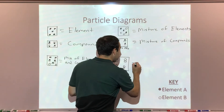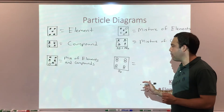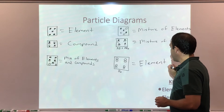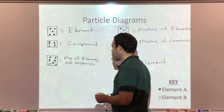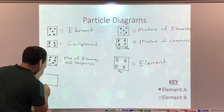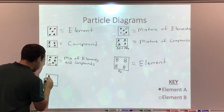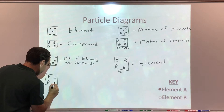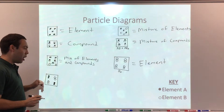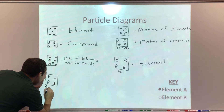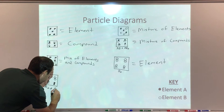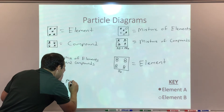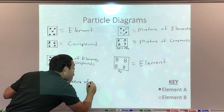Since I have two of the same element chemically combined, these are the diatomic elements. So for here, we would just write 'element' — they're all of the same element. Just like here, I have a mixture of elements: I have A2 and B2. So here we have a mixture of elements.